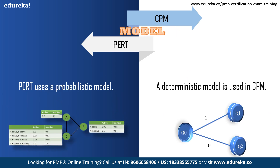Now let's compare the two in terms of models. PERT uses a probabilistic model, meaning it takes into account the uncertainties involved in the estimation of time of a job or an activity.